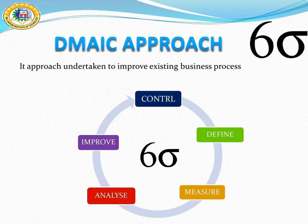DMAIC methodology consists of five phases: D for Define, M for Measure, A for Analyze, I for Improve, and C for Control.